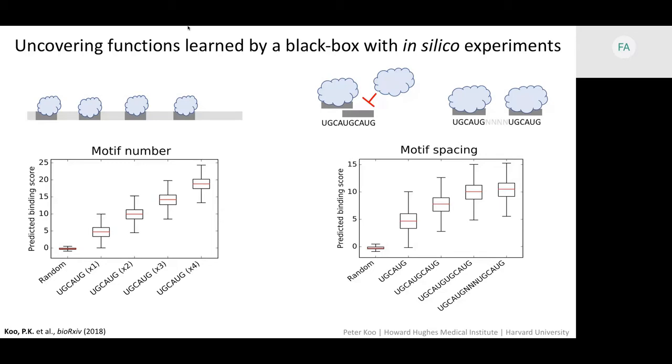And from the saliency plots, I also noticed this other pattern, this UGCAUGCAUG, which looks like two overlapping motifs. And I would imagine that if one of these sites is bound, it could potentially sterically block the other site from binding. So I would imagine that it would have a lower binding score compared to if these two binding sites are well separated.